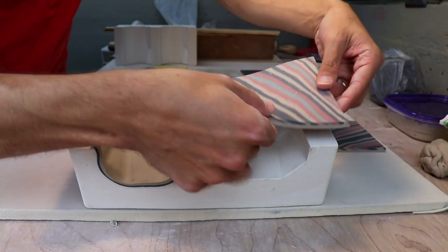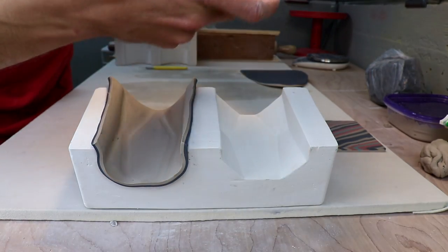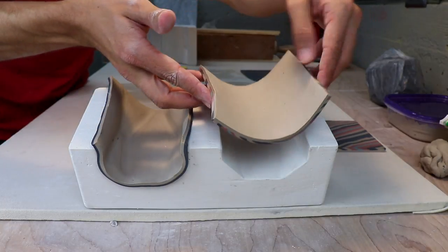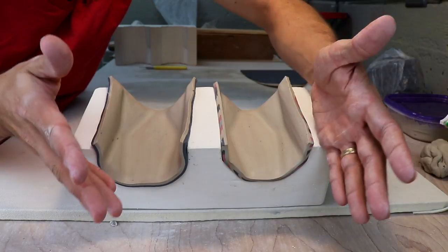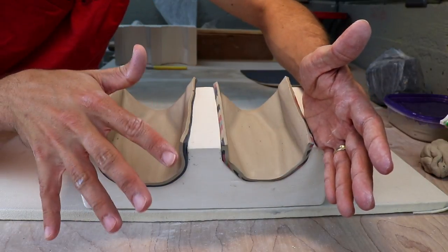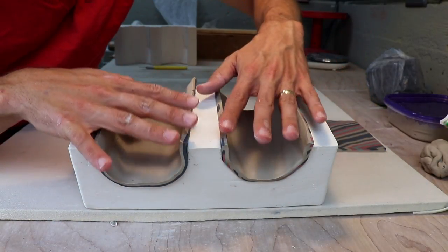So the colored slab, same deal. Taco it up, lay it in and compress it into the mold. This part can be tedious, but don't rush through it. If you do, you'll lose the detail from your mold.